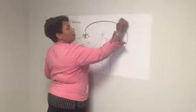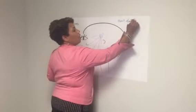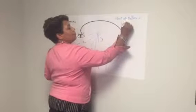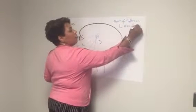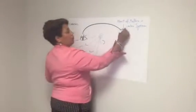This heart of the brain is the limbic system. Why do we call it the heart of the brain? Because it's responsible for emotions and feelings.